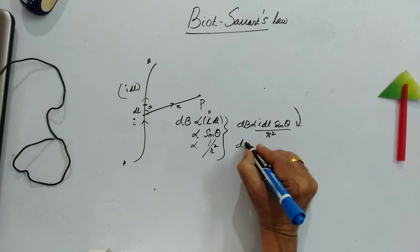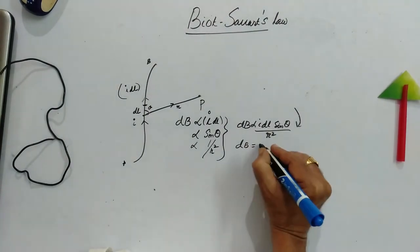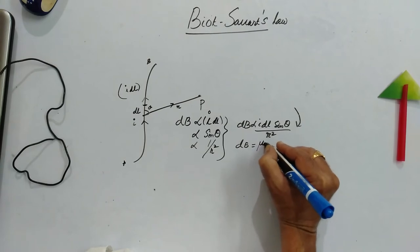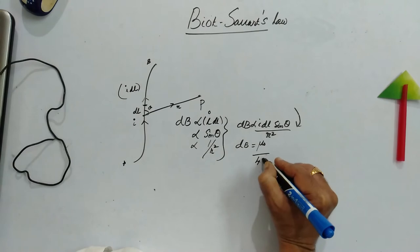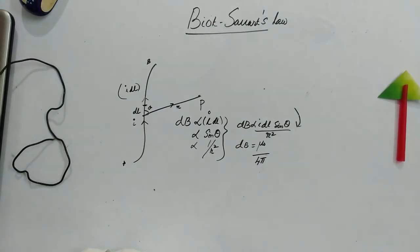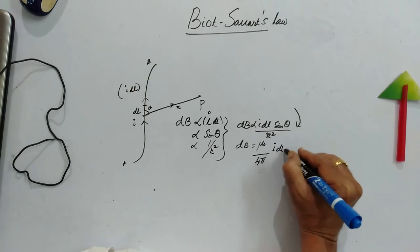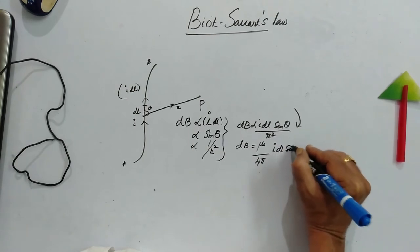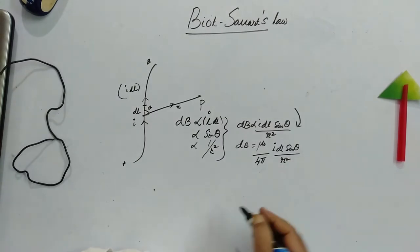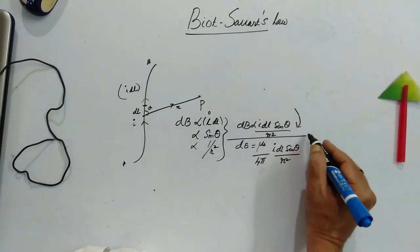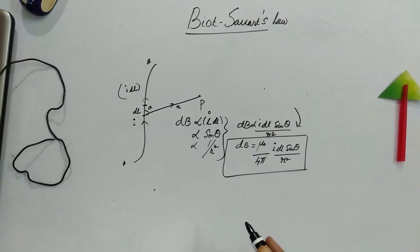Now this should be converted into equation. Then we need one constant of proportionality, which is mu naught by 4 pi. So this is the equation of Biot-Savart's law.